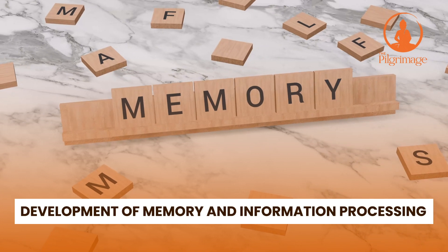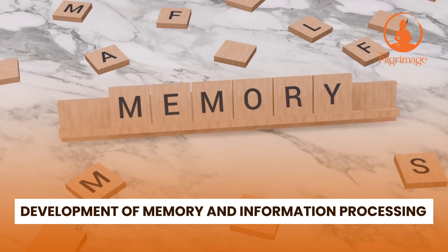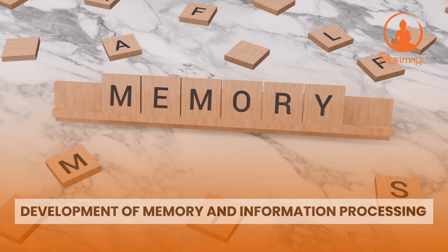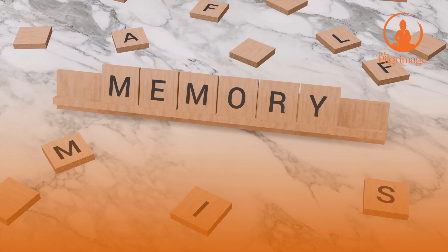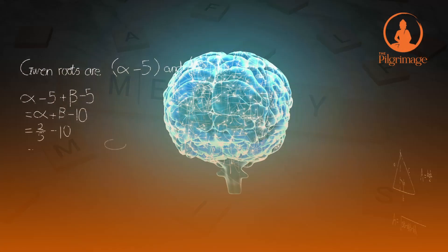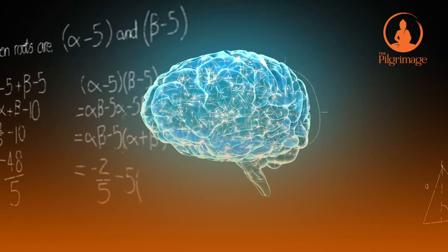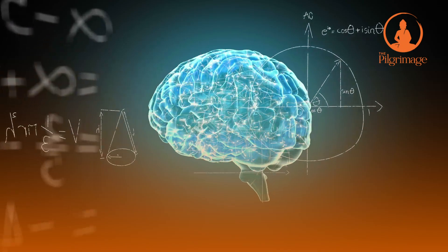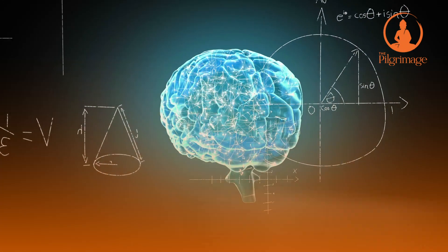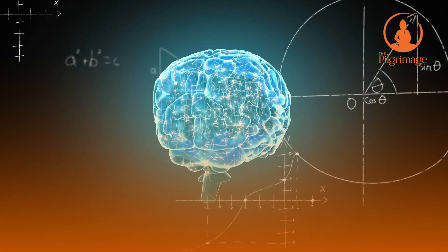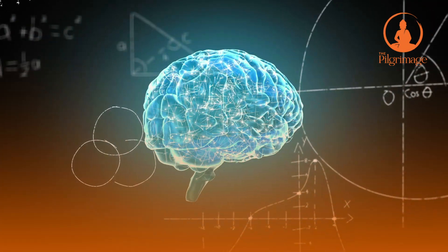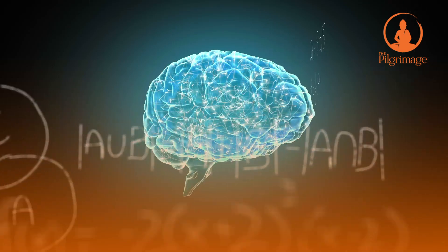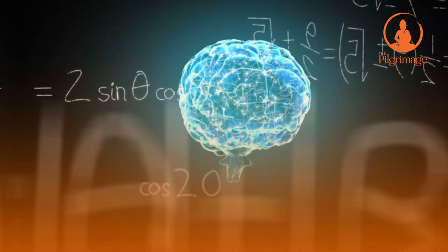Development of Memory and Information Processing. As previously stated, cognition is the encoding, structuring, storing, retrieving, using, or otherwise learning of knowledge. There are important developmental aspects for each of these activities.